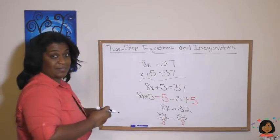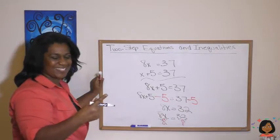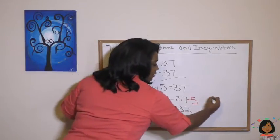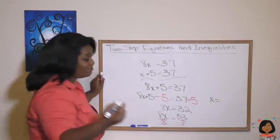And now let's go ahead and simplify. On this side, the 8s cancel out. So we're left with an x. I'm going to write it over here. And this side, 32 divided by 8 is going to be 4.